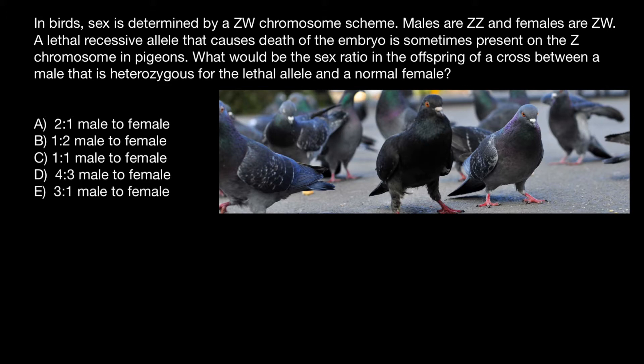According to our problem, males are homozygous — their genotype is ZZ — and females are heterozygous. In mammals, it is usually the opposite: males are heterozygous for the sex chromosomes, XY, and females are homozygous, XX. But in birds, the female defines the sex of the offspring, not the male.